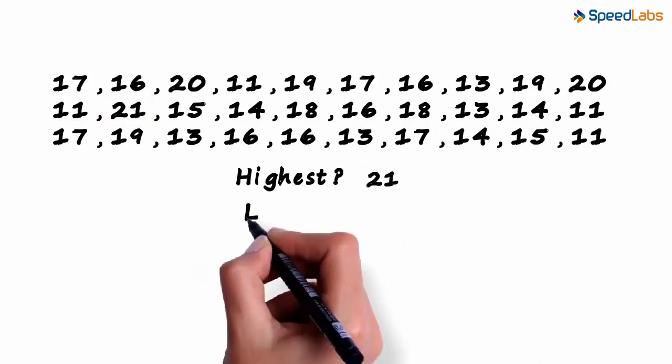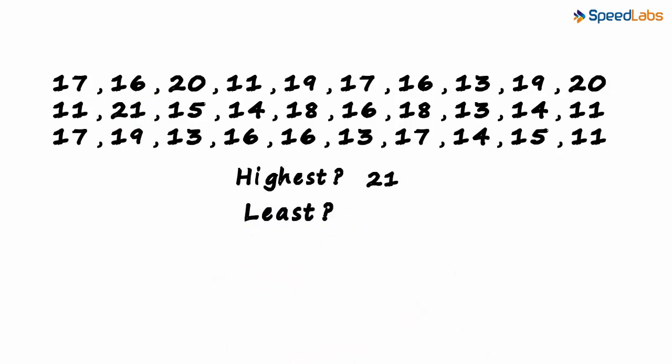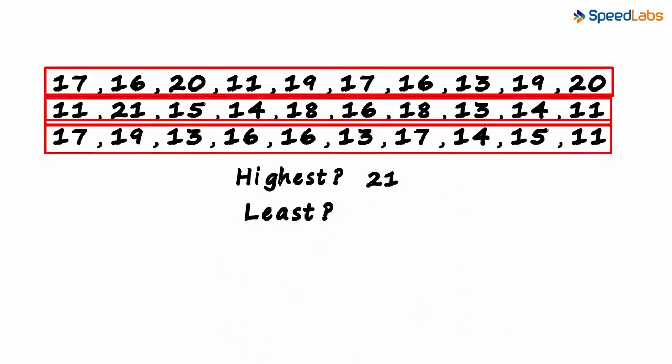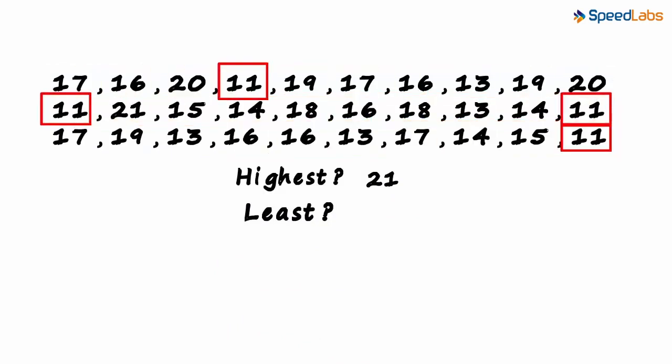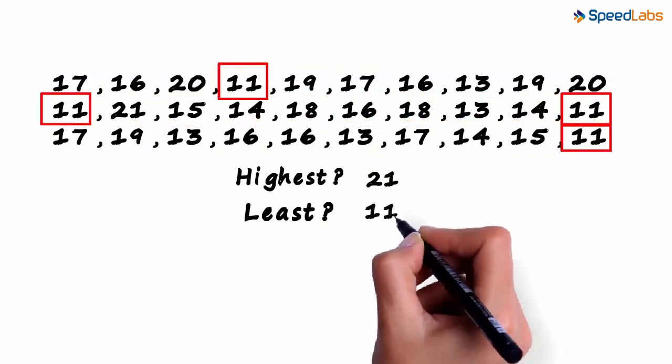What about the lowest marks scored? You would follow the same procedure of scanning each row and ultimately find out that it's 11. There is no number lower than 11 in this set.